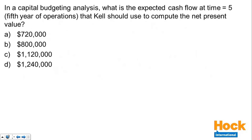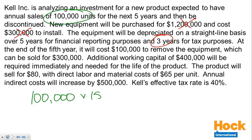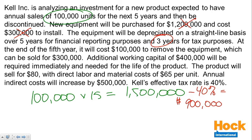The last question is about year five. In year five, we're no longer interested in depreciation because the asset is fully depreciated after three years for tax purposes. We do care about the 100,000 units — they still have a $15 contribution per unit — giving us $1,500,000 of contribution. After paying taxes at 40%, this comes down to $900,000. We also still have the indirect costs increasing by $500,000, which adjusted for taxes becomes a $300,000 outflow.